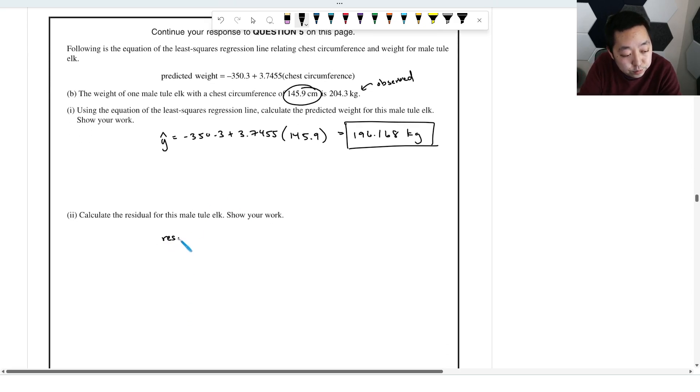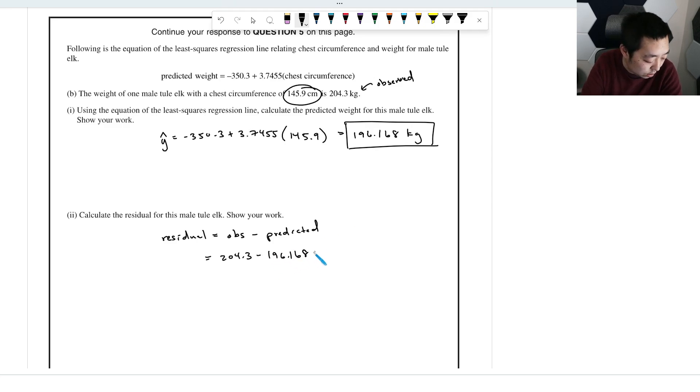The residual is observed minus prediction. So the residual is the observed minus the predicted. So we're going to take our observed value, 204.3 and subtract the predicted value, 196.168. So you do 204.3 minus the answer there and I get 8.1316 kilograms. I just truncated or rounded to four decimal places.